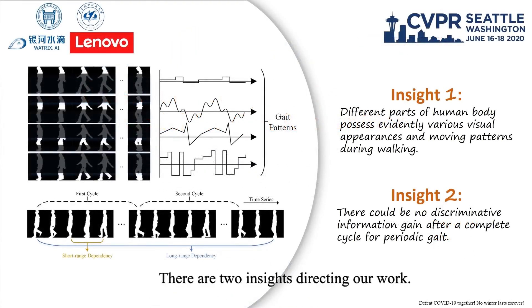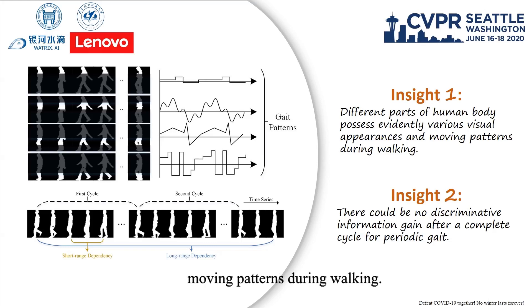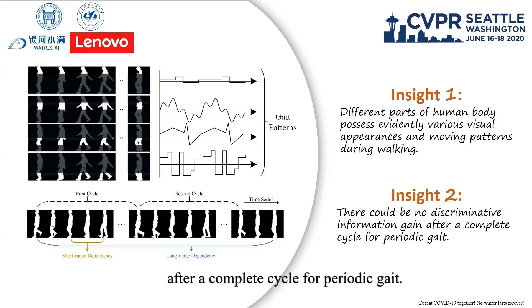There are two insights directing our work. The first is that different parts of the human body have evidently various visual appearances and moving patterns during walking. Another is that we assume there could be no information gain after a complete cycle for periodic gait.